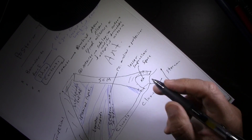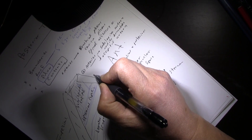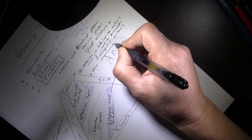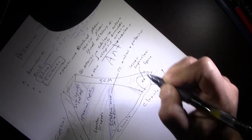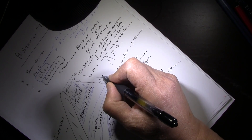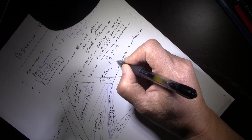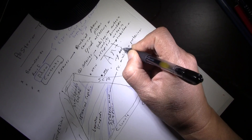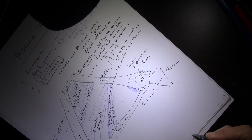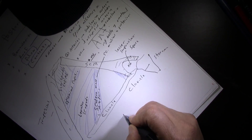There is also a vein in the triangle, which is the subclavian vein, along with the terminal part of the external jugular vein. In addition, there is a muscle inside the triangle called the inferior belly of the omohyoid.